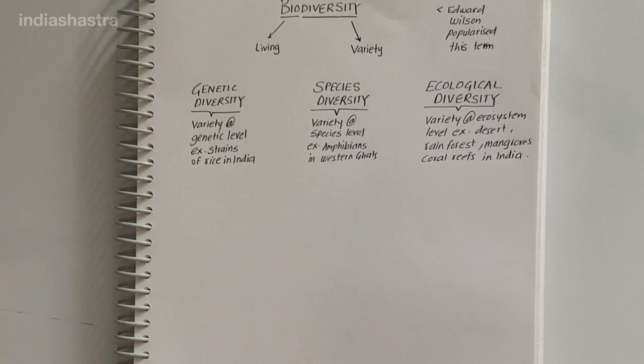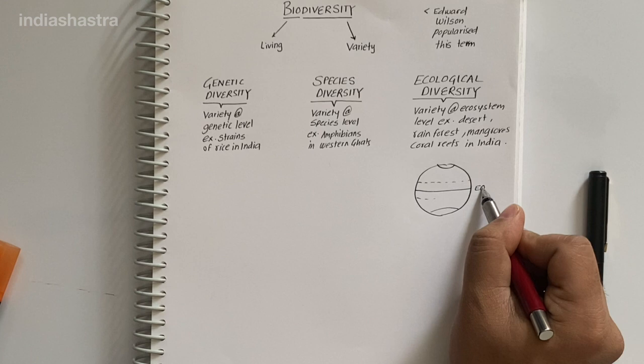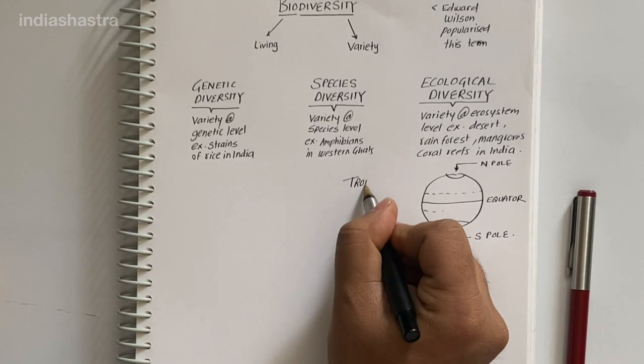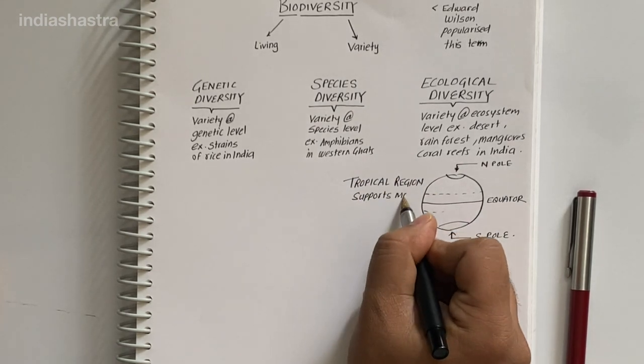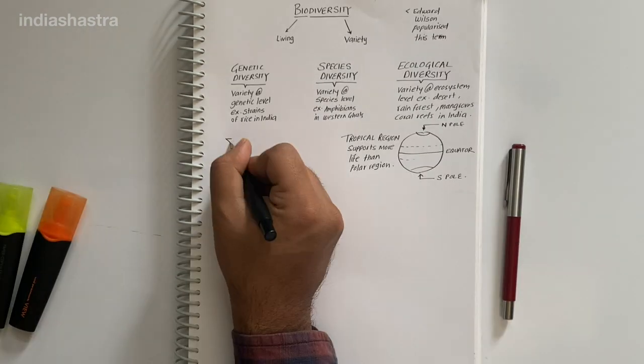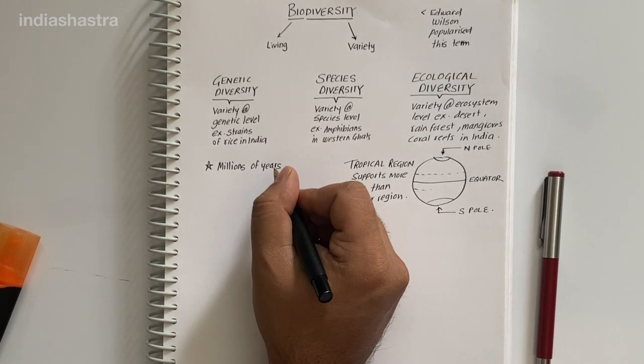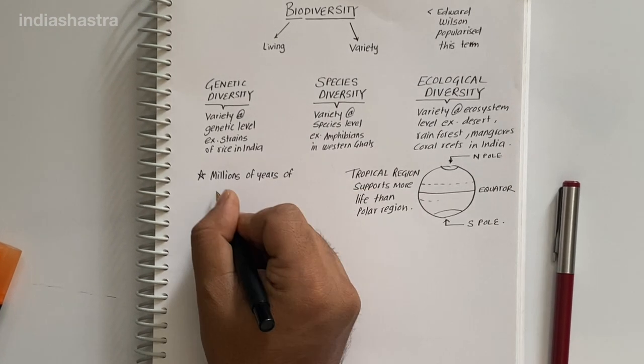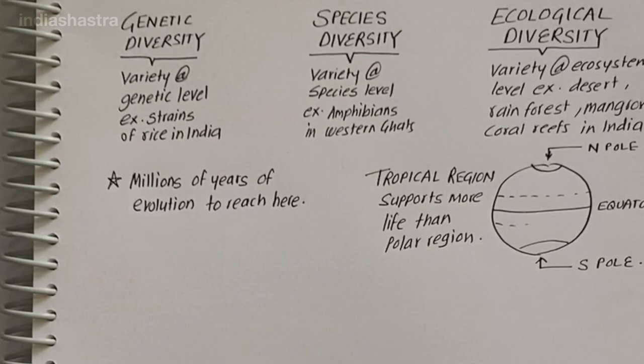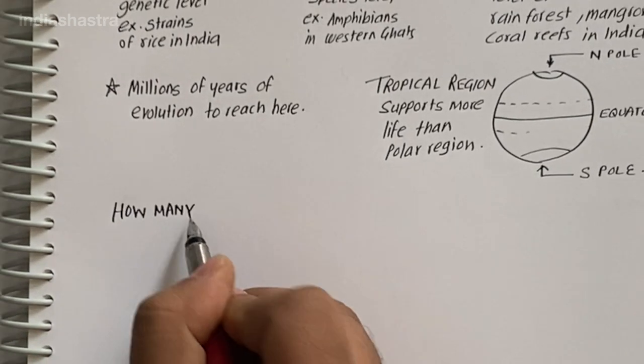Diversity of life is not evenly distributed. Tropical region supports more life than polar region. That's why India has greater ecosystem diversity than Scandinavian countries like Norway, Sweden, Finland near polar region. India took millions of years of evolution to accumulate this rich diversity. But we could lose all that wealth in less than two centuries if present rates of species loss continue.